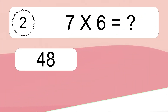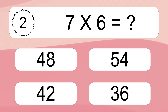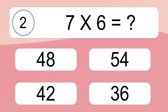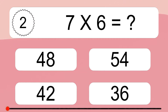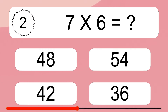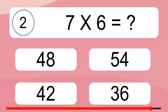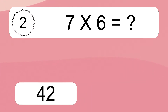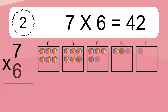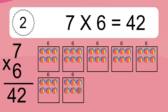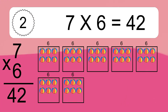7 times 6 equals what? 7 times 6 equals 42.